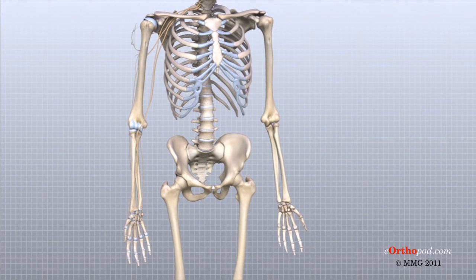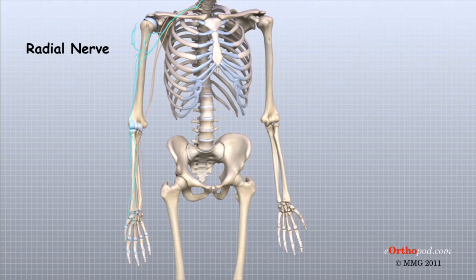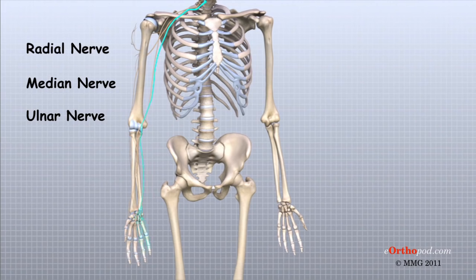All of the nerves that travel to the hand and fingers begin together at the shoulder: the radial nerve, the median nerve, and the ulnar nerve. These nerves carry signals from the brain to the muscles that move the arm, hand, fingers, and thumb. The nerves also carry signals back to the brain about sensations such as touch, pain, and temperature.